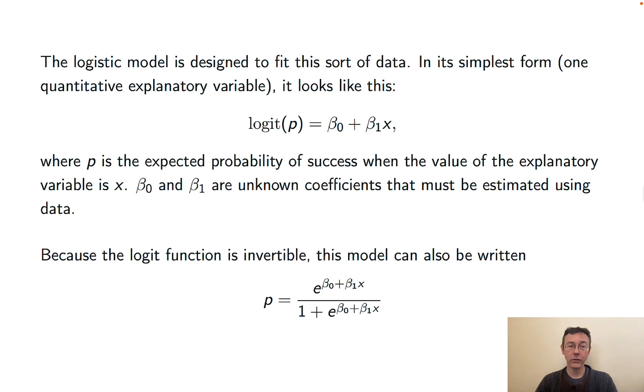The logit function is invertible, and so that model can be written like this: p equals e to the power beta 0 plus beta 1 X over 1 plus e to the power beta 0 plus beta 1 X. I have a whole video on the logit function. I'll throw a link up top. If you're curious about that function or trying to build some intuition into it, I recommend checking that out.